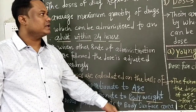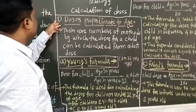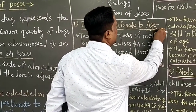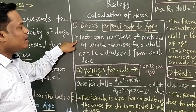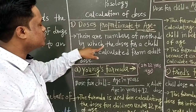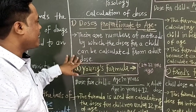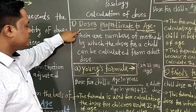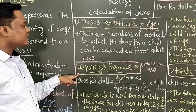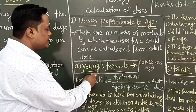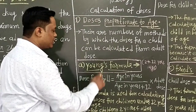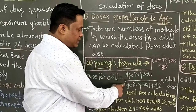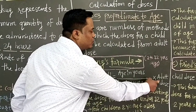There are a number of methods by which the dose of a child can be calculated from adult doses. The first category is doses proportionate to age. The first formula for calculating doses according to age group is Young's formula. The formula is: Dose for a child = (Age in years) / (Age in years + 12) × Adult dose.